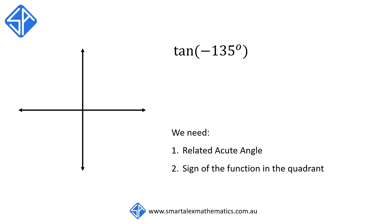Our third example: we have tan negative 135 degrees. Again, we start off at zero degrees, but this time we're going to be rotating in the clockwise direction because that corresponds to a negative angle. Starting from zero, we rotate clockwise for 135 degrees, and this ray corresponds to the angle negative 135 degrees. The related acute angle is the angle between the ray and the x-axis, which is 45 degrees.